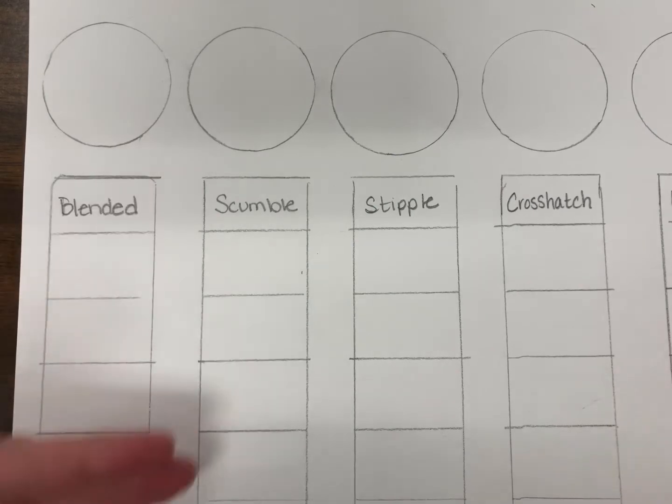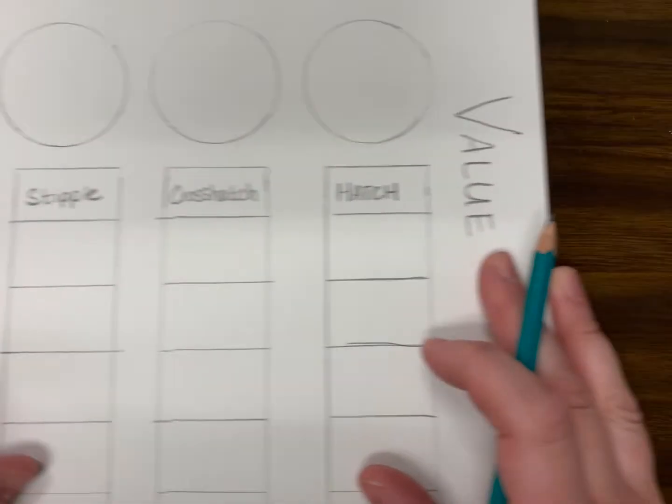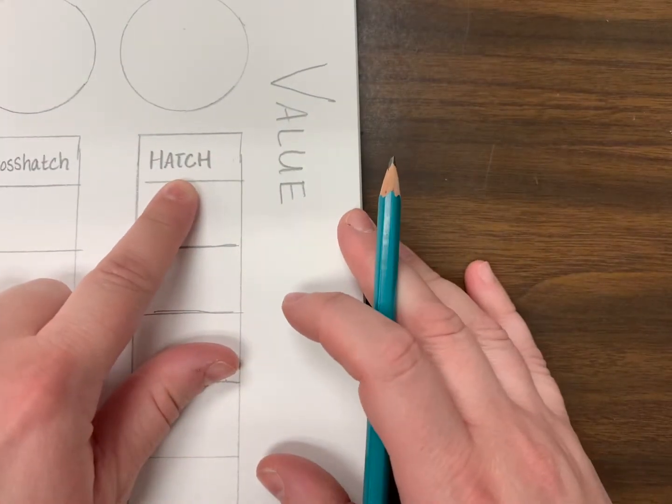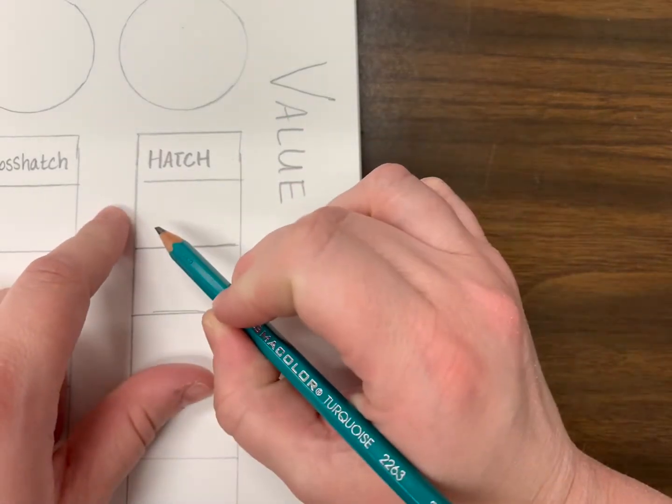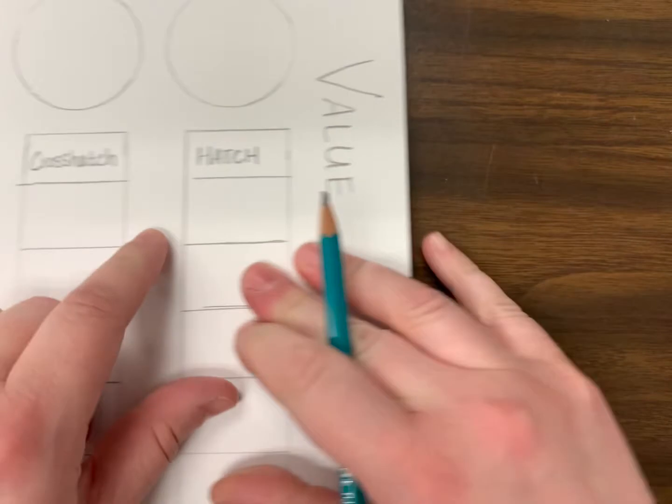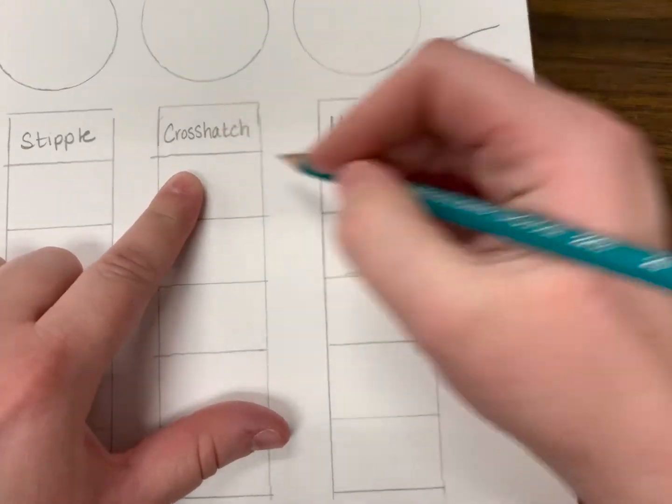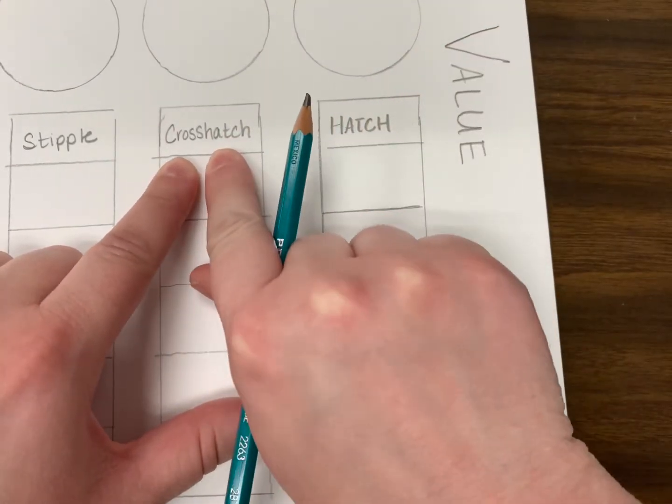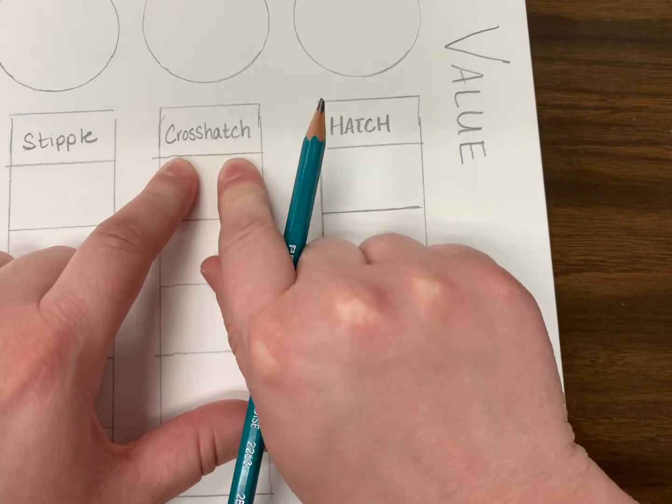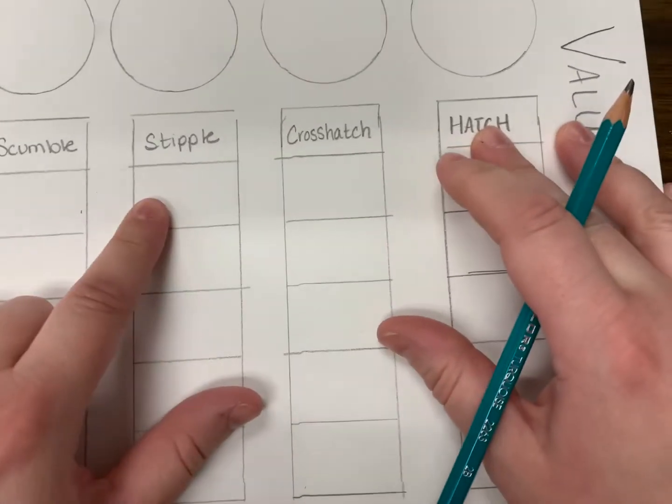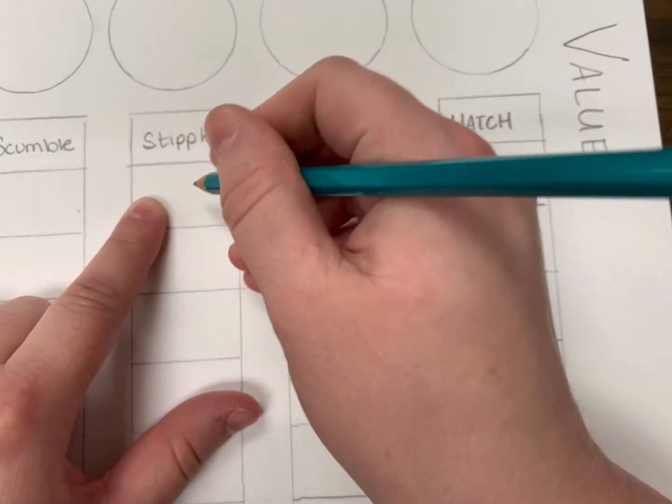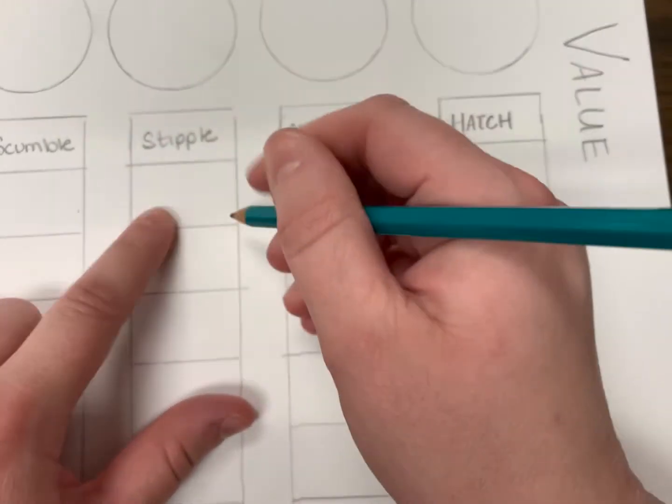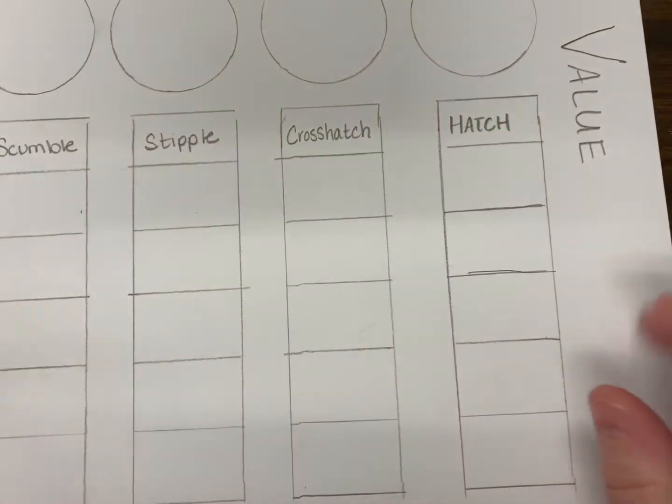A lot of times you can use a blending stump so that all of the values are evenly blended. There is a hatch mark—this is talking about lines going in the same direction. When those lines start to crisscross in different directions over top of each other, they're known as a crosshatch. A series of dots—so instead of little lines, you're applying the value with little dots in a stipple pattern.